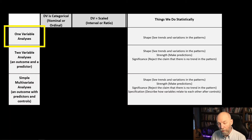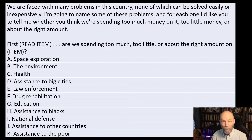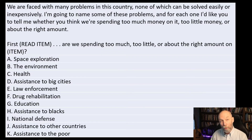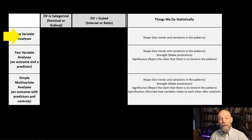There are no predictors. I have a list of variables, but I don't believe any one of them helps explain why people answered the others. Normally we think about predictors or independent variables — do men and women have different views, do rich and poor have different views? Those are causal agents for two-variable analyses. Since we don't have predictors, we go with one-variable analyses, meaning our tool will come from that row of the framework.